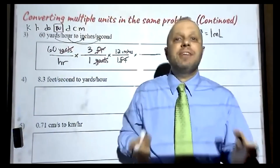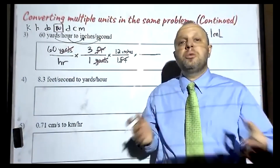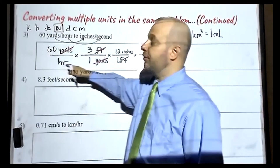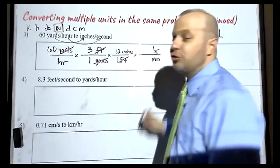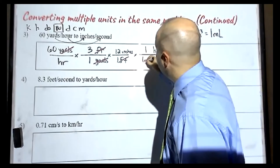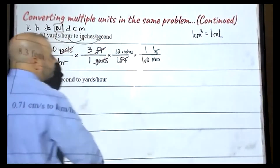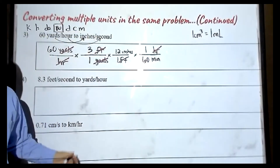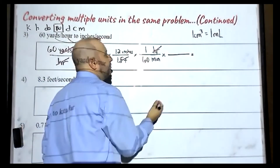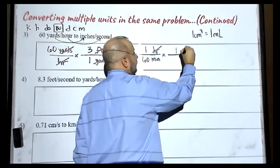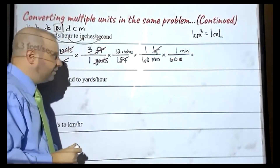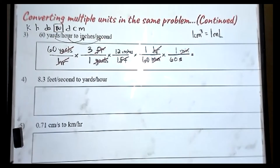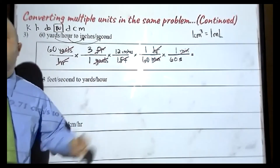Some of you know how many seconds there are in an hour, others don't. Hours is going to go on top because hours is currently on the bottom and we want it to cancel out. We might not know how many seconds are in an hour, but we should know how many minutes are in an hour — so one hour has 60 minutes. That allows me to cross out units of hours. In the next fraction, I can say there are 60 seconds in every one minute, and that will allow me to cross out units of minutes.